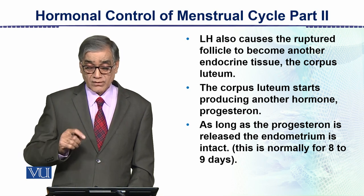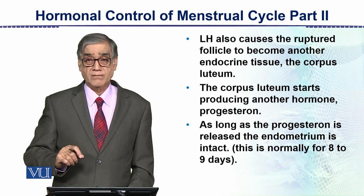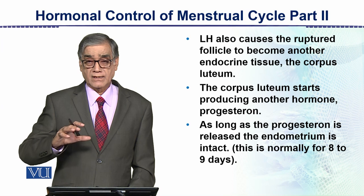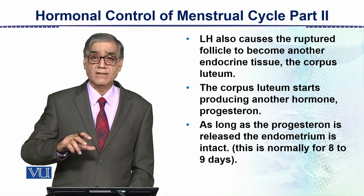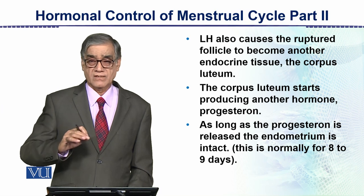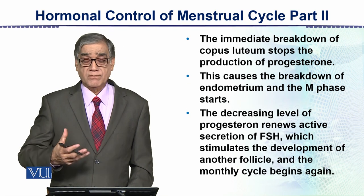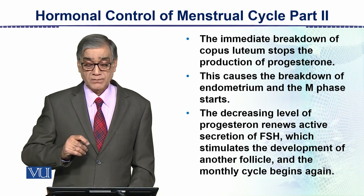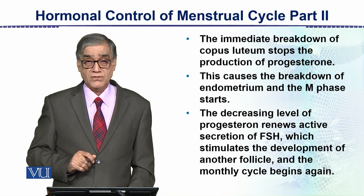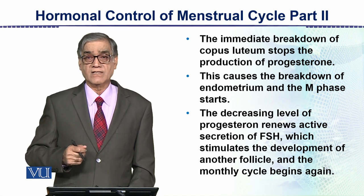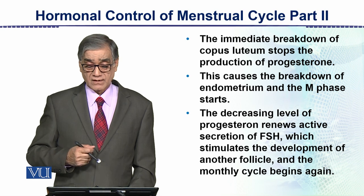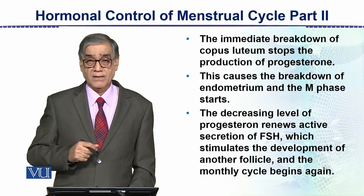As long as progesterone is released, the endometrium remains intact. Then the breakdown of the corpus luteum stops the production of progesterone, which causes the breakdown of the endometrium and the menstrual phase starts. The decreasing level of progesterone renews active secretion of FSH, which stimulates the development of another follicle and the monthly cycle begins again.